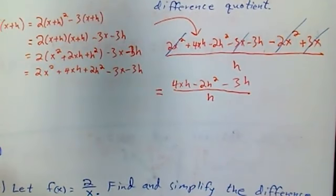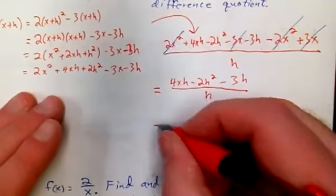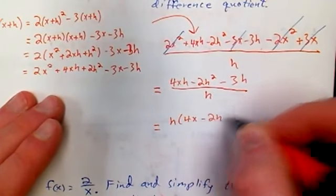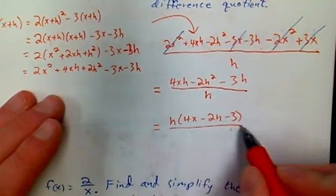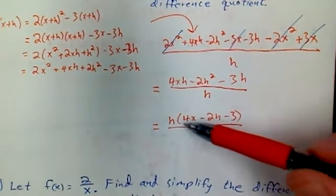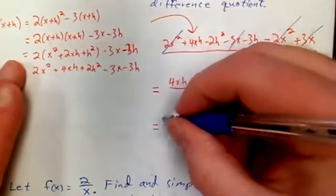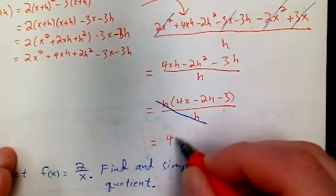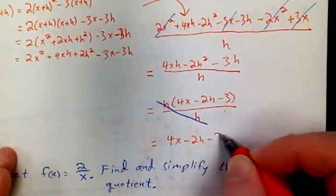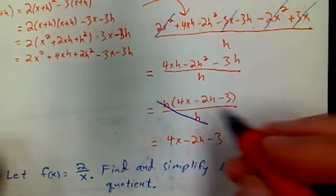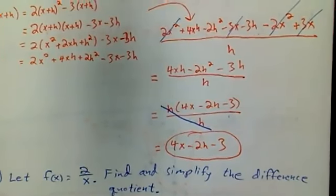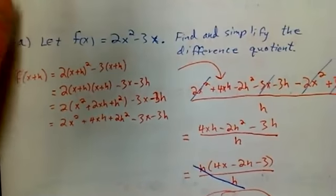Now, if you want to fully simplify this, what could you do to the top? You could pull out an h. So this is h times (4x minus 2h minus 3) all over h. Now that I've got an h factored out, now I can go ahead and I can cancel. So I'm just left with 4x minus 2h minus 3. So that right there is that difference quotient. So there's some algebra, but it's really not that bad.